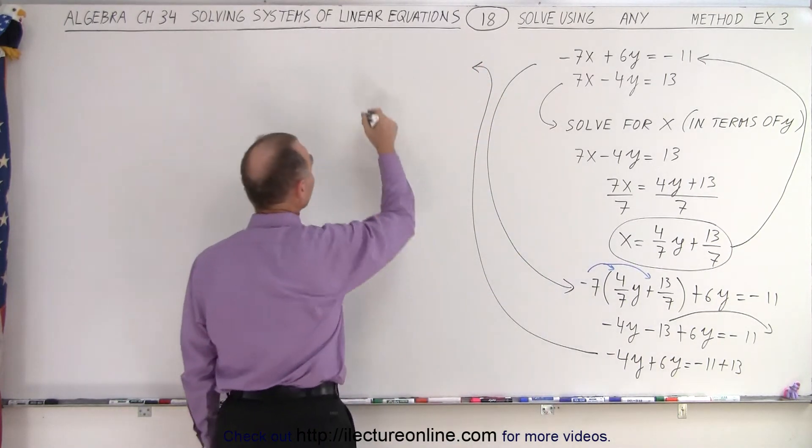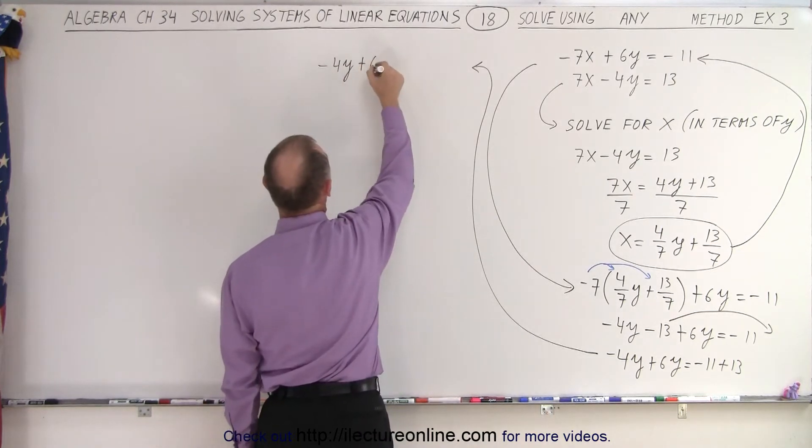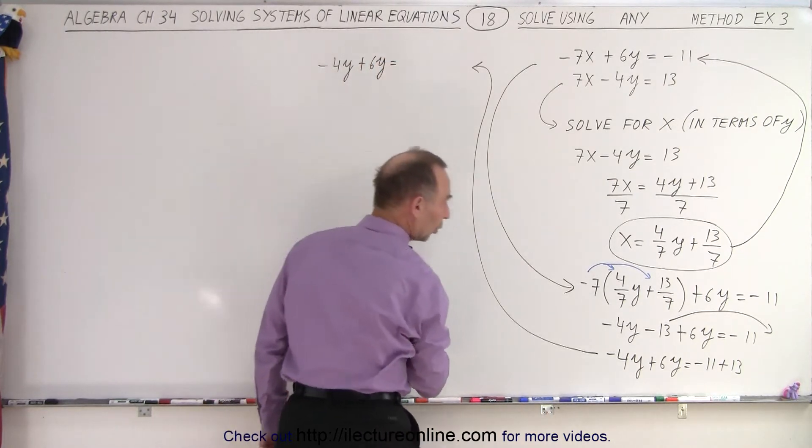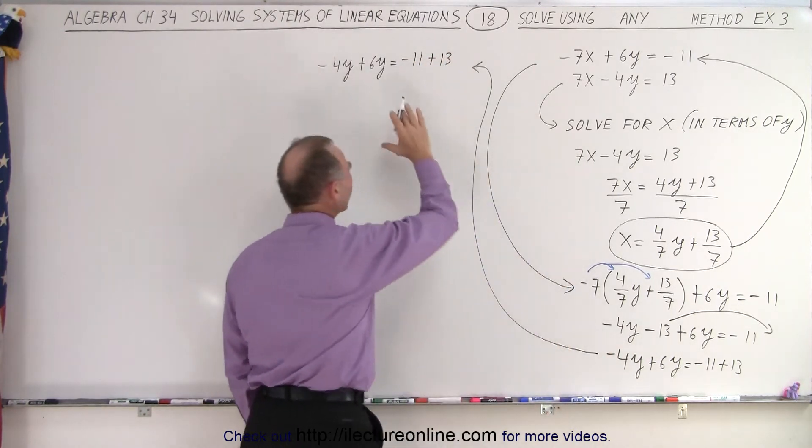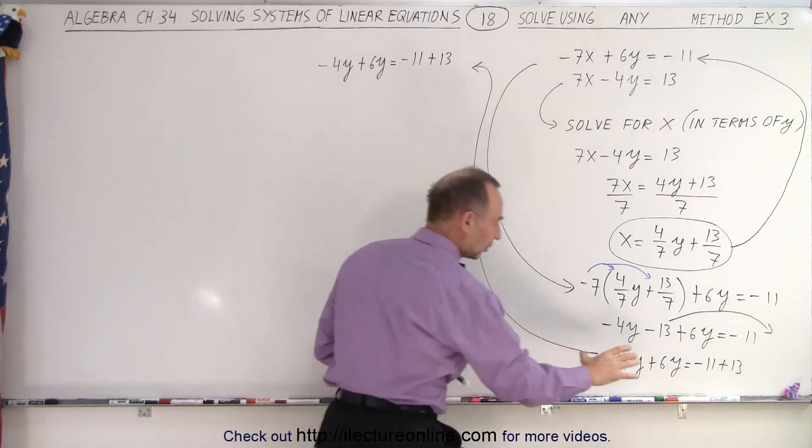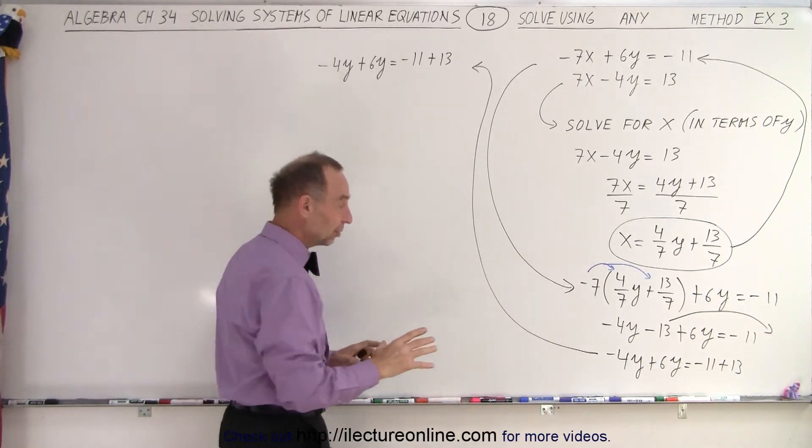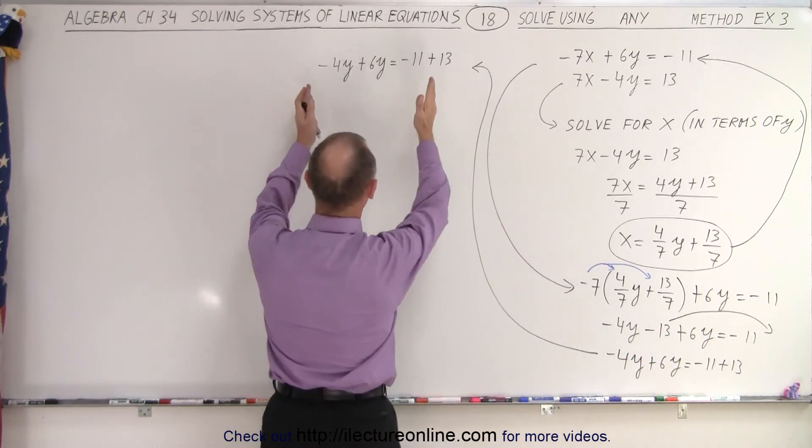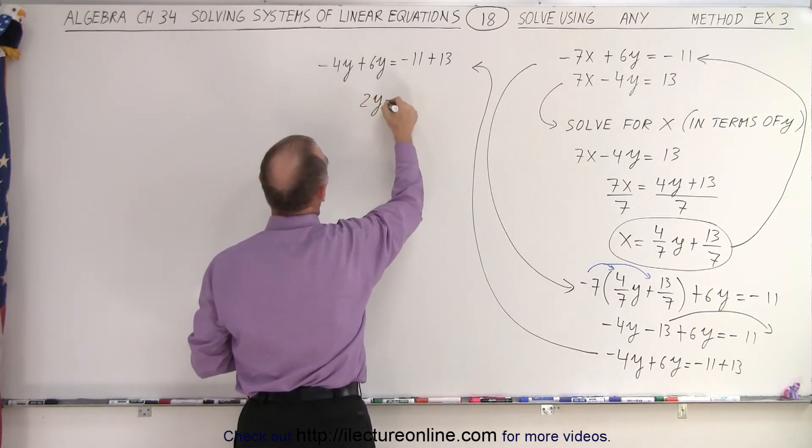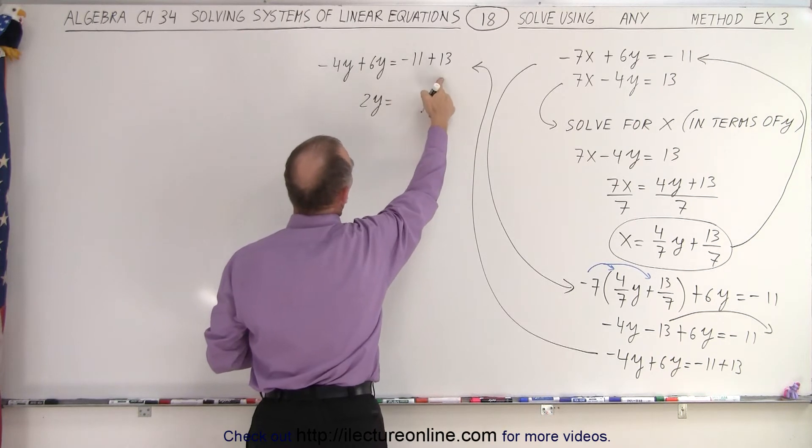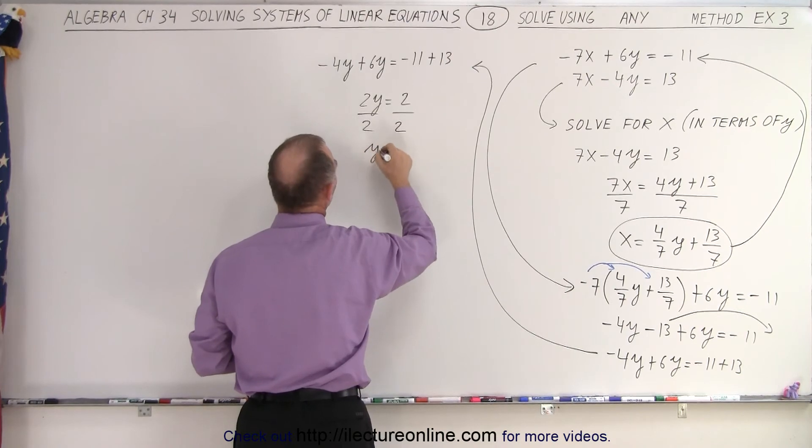Continuing on over here, let's rewrite the equation. Minus 4y plus 6y is equal to minus 11 plus 13. Why did I rewrite the equation? Because visually trying to solve the equation here by putting the answer over there, it's kind of hard for the brain. It's better just to take that equation, rewrite it over here, so you're just looking at it from the same direction. So now combine these two terms, we get 2y is equal to negative 11 plus 13, that would be plus 2. Divide both sides by 2 and we get y equals 1.